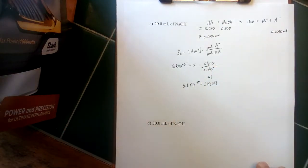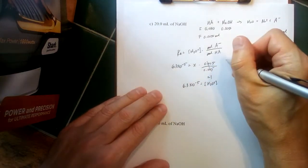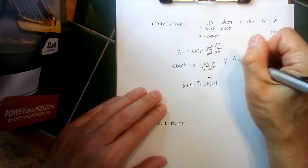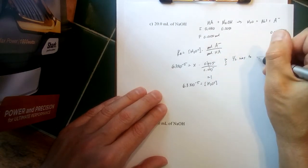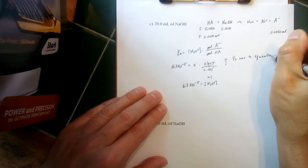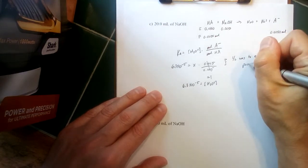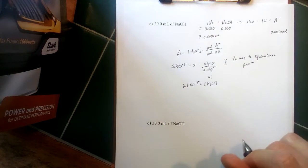So this is a special part of the titration—this is called halfway to the equivalence point. The equivalence point would be where the moles of base that we've added is equal to moles of acid that we had—it's where we will neutralize all the acid.